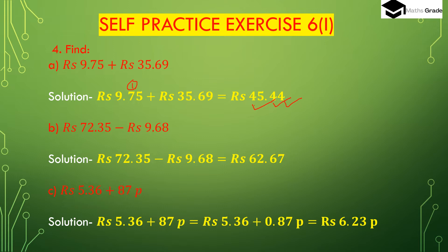Now part (b) is subtraction: 72 rupees 35 paise minus 9 rupees 68 paise. We have to subtract these two amounts. First we subtract the paise column: 35 paise minus 68 paise — we can't do this, so we take 1 rupee from the rupees part. 1 rupee is 100 paise, so 100 paise plus 35 paise is 135 paise. 135 paise minus 68 paise is 67 paise.